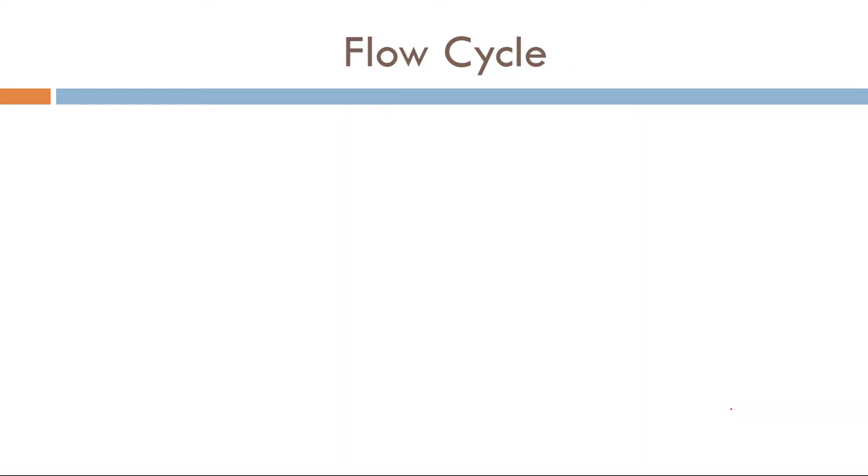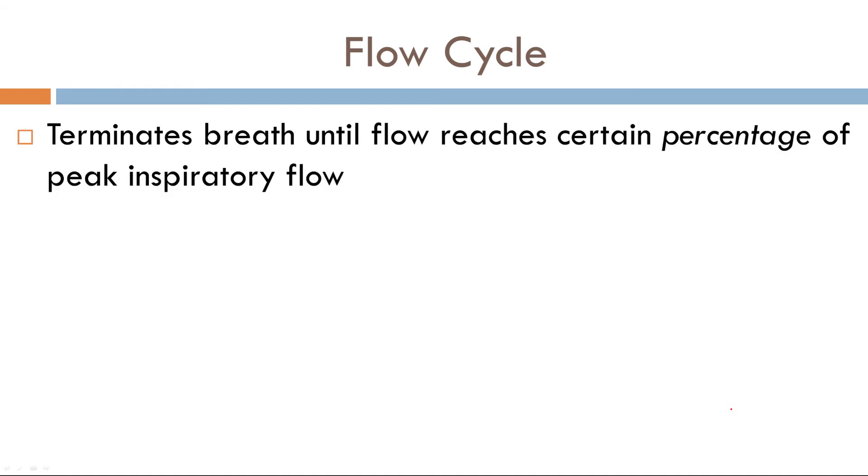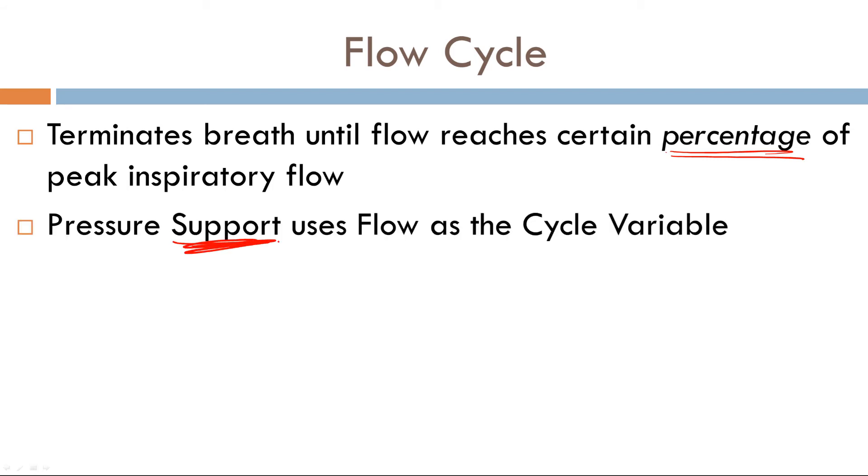Now flow cycle. This is the one that's a little bit more involved. Let's discuss it. Here's a definition. The vent will continue to deliver a breath until the flow reaches a certain percentage of the peak inspiratory flow. Now what mode of ventilation uses flow as the cycle variable? Pressure support, not pressure control. Pressure support ventilation uses flow as a cycle variable.